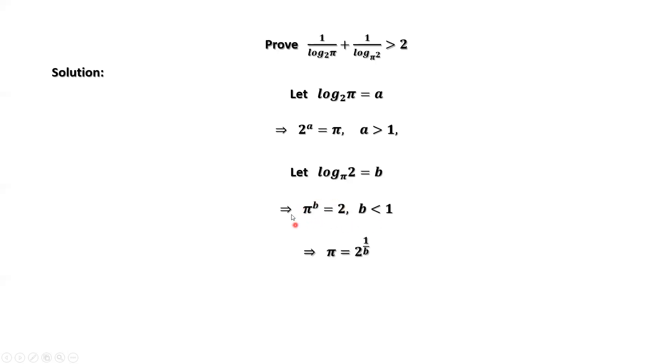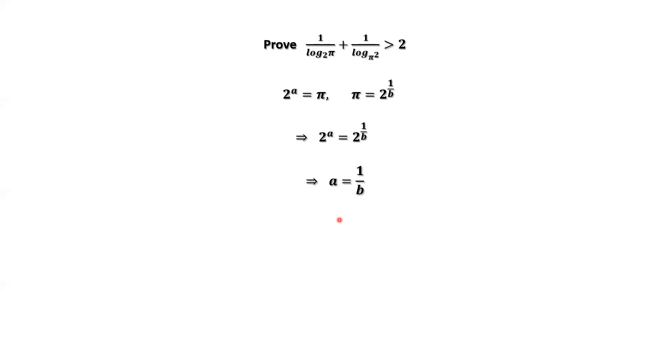From this result, we have pi equals 2 to the power of 1 over B. Now we have two results. From the two results, we have 2 to the power of A equals pi equals 2 to the power of 1 over B. Therefore, A equals 1 over B. This also implies B equals 1 over A.